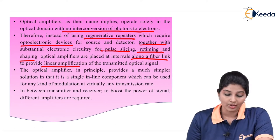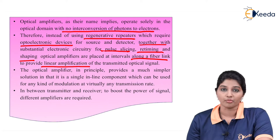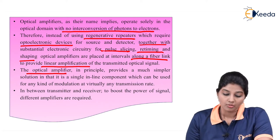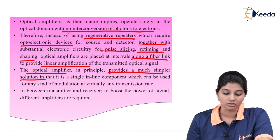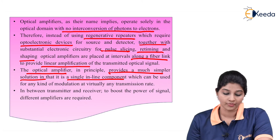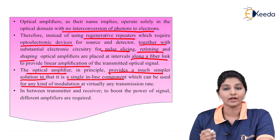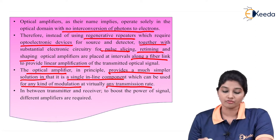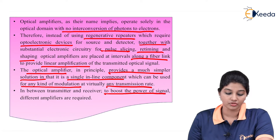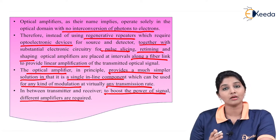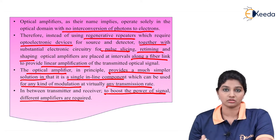It provides linear amplification of the transmitted optical signal. The optical amplifier in principle provides a simpler solution — that is a single inline component which can be used along the optical fiber, and it can be used for any kind of modulation at virtually any transmission rate. Between the transmitter and receiver, to boost the power of the signal, different amplifiers are required. So basically, optical amplifiers are nothing but a power booster to the signal.